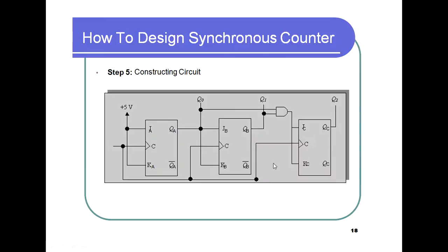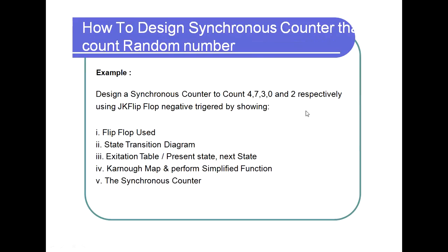Now, how to design a synchronous counter that counts a random sequence: for example, a counter to count 7, 4, 7, 3, 0, 2. Using JK flip-flops and negative-edge triggering, we draw the state transition diagram, build the excitation table with present and next states, apply Karnaugh mapping, and derive the simplified functions — the same approach as before.